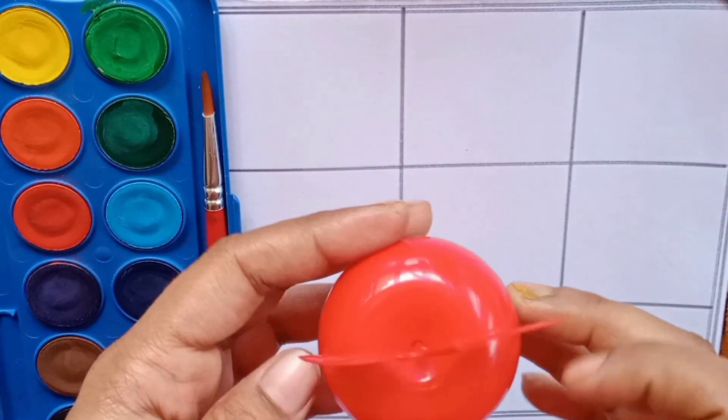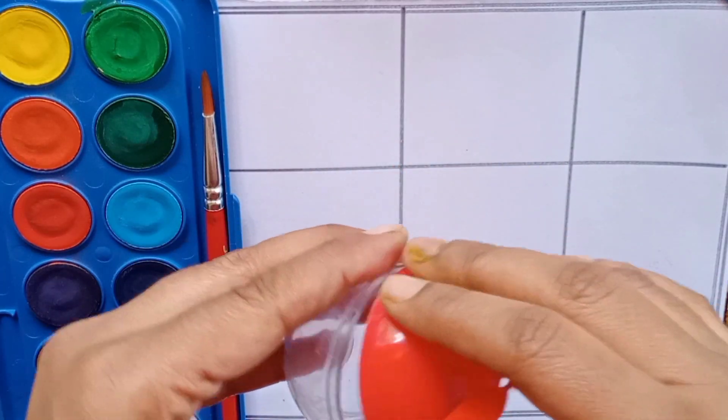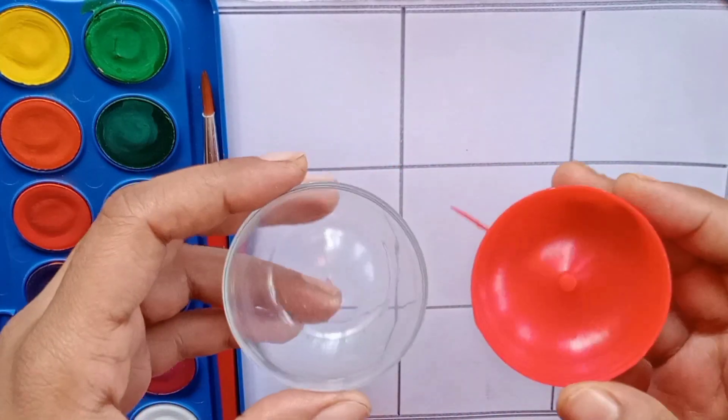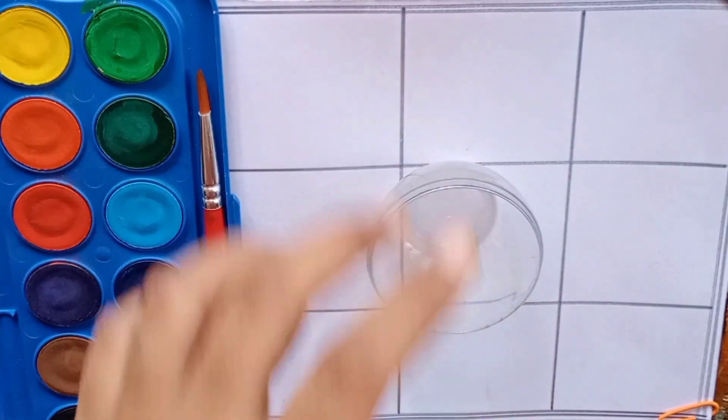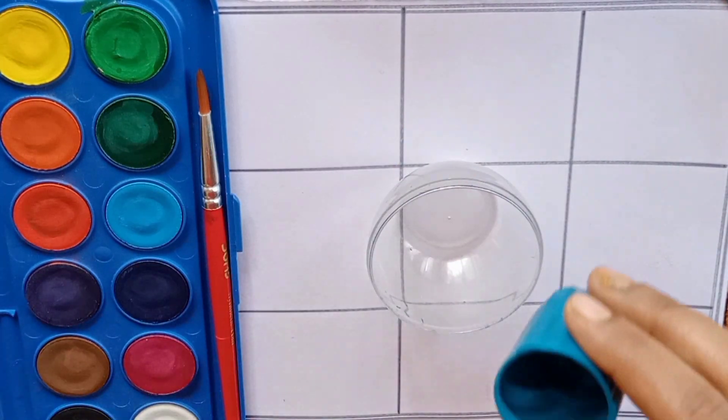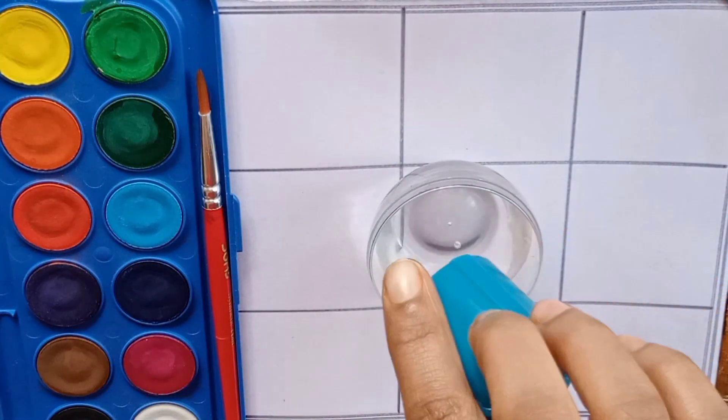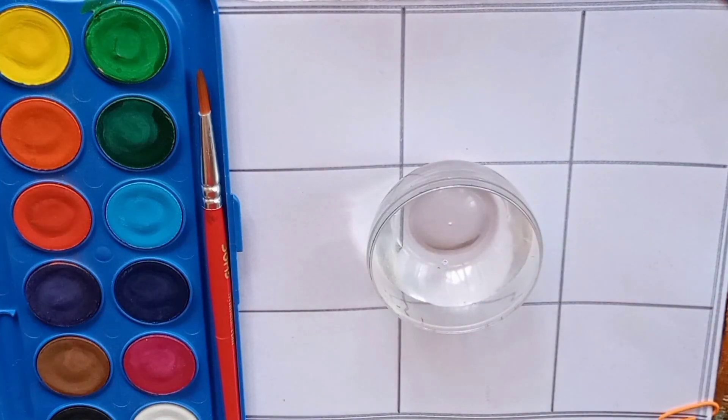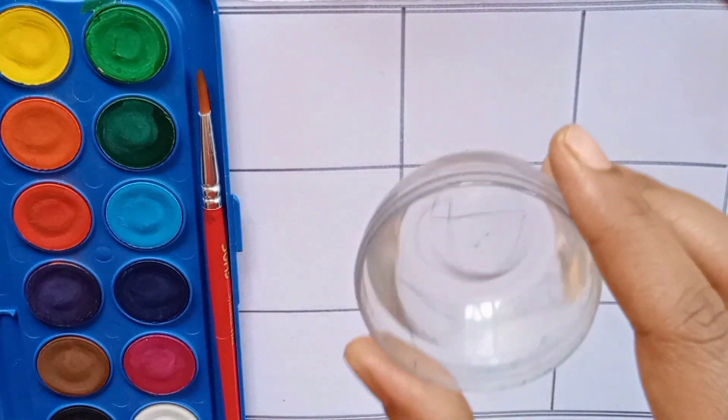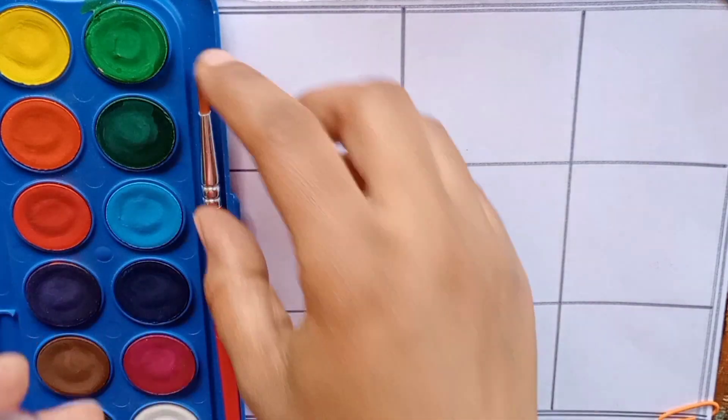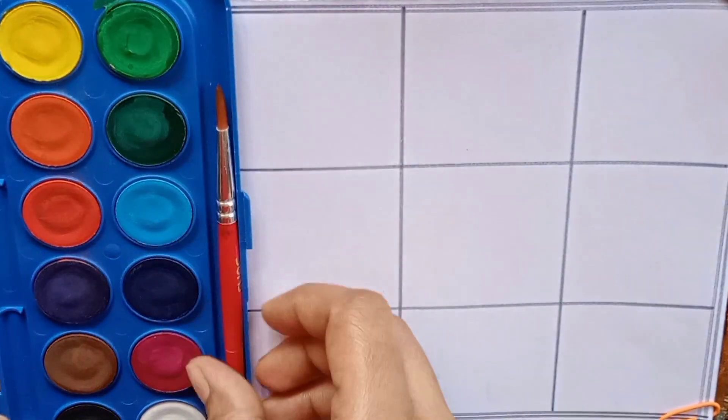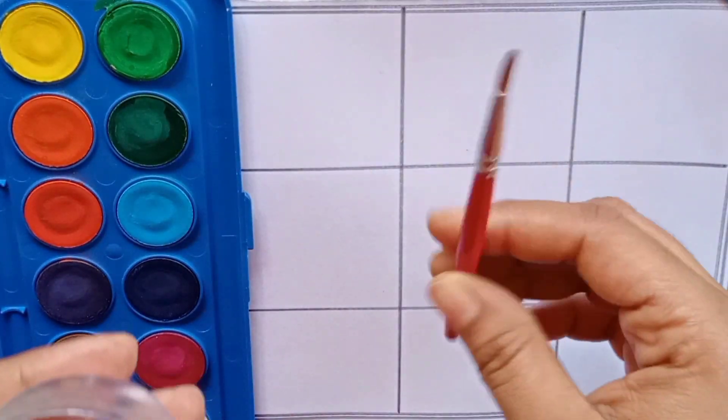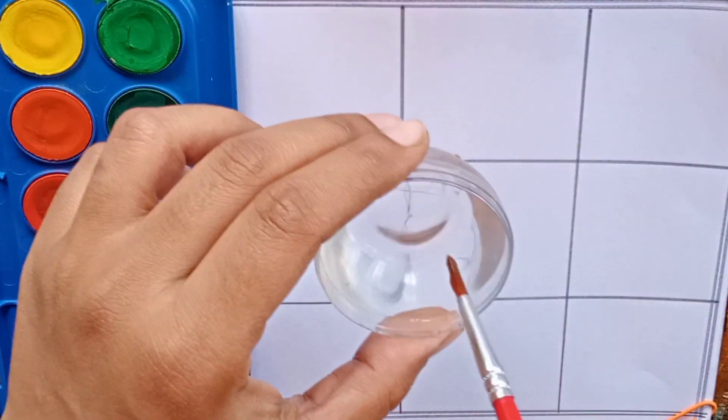An apple, open it. Now we will pour some water. Green color, at first wash the brush. What is your favorite color kids?